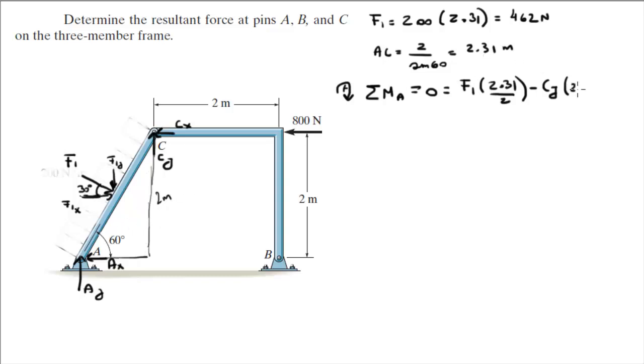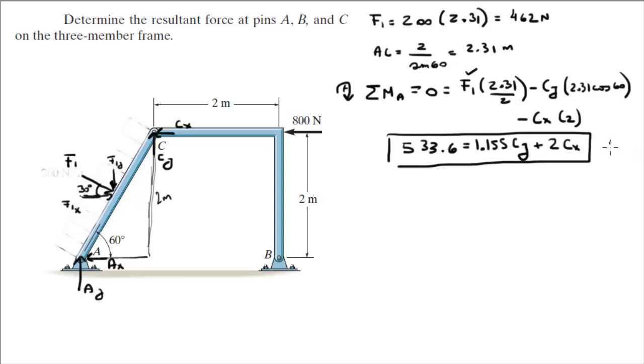minus CY times, CY will be turning this part of this triangle, so it will be 2.31 times cosine of 60, minus CX times 2, because CX is trying to turn this length right here. So, we got F1, we don't got CY and CX. So, we're going to build an equation right now. When you clean this up, plug in F1 and clean it up for solving it. You're going to get this equation 533.6 is equal to 1.155 CY plus 2 CX.